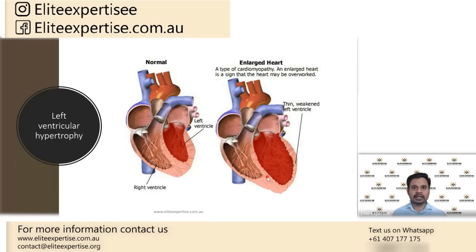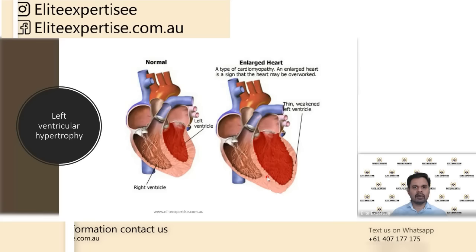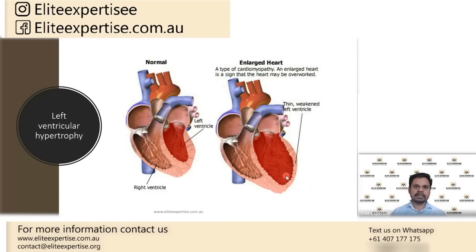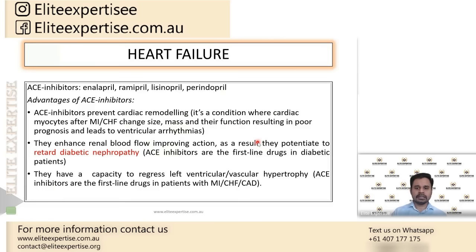This is similar to Frank-Starling's law. When a rubber band is stretched to a larger extent for a prolonged period, it loses its recoiling property and won't return to normal size. The same happens with the left ventricle — it becomes completely stretched, the cardiac myocytes lose their elastic recoiling nature, and the ventricle won't undergo forceful contraction. This is what happens if the patient does not take ACE inhibitors long-term, leading to cardiac remodeling.